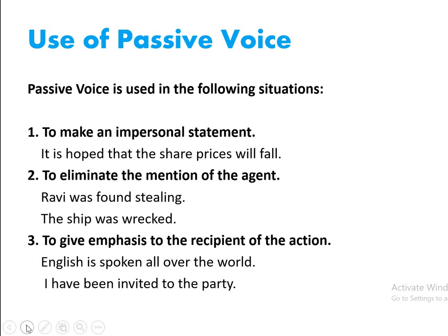Let us try to understand where we use passive voices. Passive voice is used in the following situations. Number one, to make an impersonal statement — like 'It is hoped that the share prices will fall.' Number two, to eliminate the mention of an agent — 'Ravi was found stealing', by whom is not important. So the agent has been removed. Similarly, 'The ship was wrecked' — here again we eliminate the mentioning of the agent.